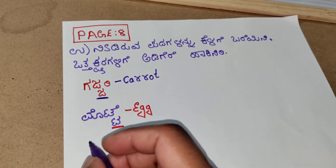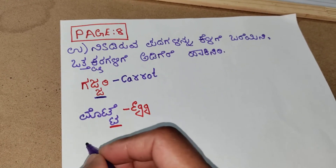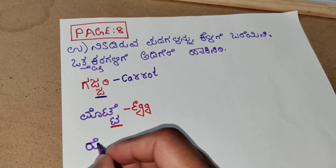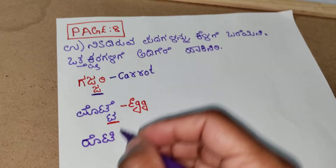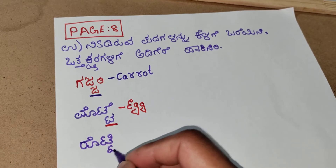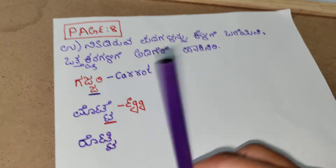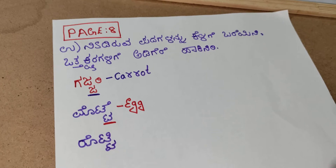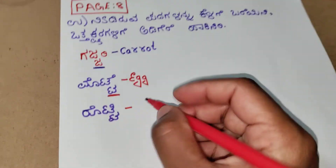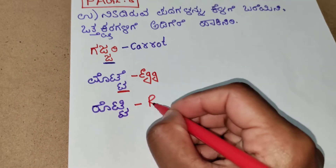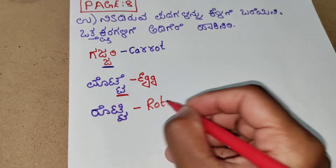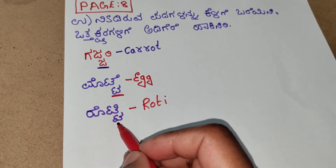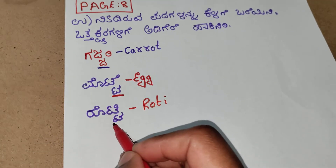The next word is roti. Roti — the meaning of roti is roti. Here the otthakshara is thavato.